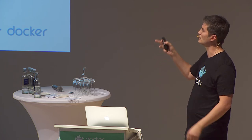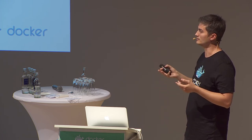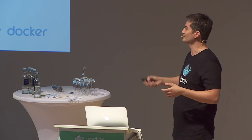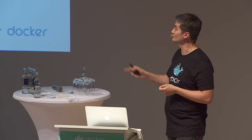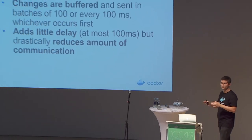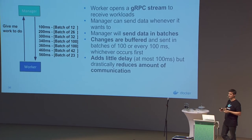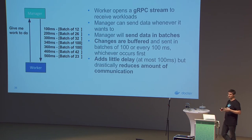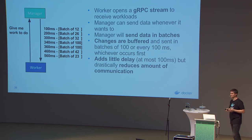A good analogy is train stations. If every task had to travel independently from manager to worker, it's like each task taking a car — not very efficient, with overhead and potential traffic congestion. Instead, we have a train station: the manager ships tasks there and a train leaves every 100 milliseconds. The worker processes tasks by the trainload.